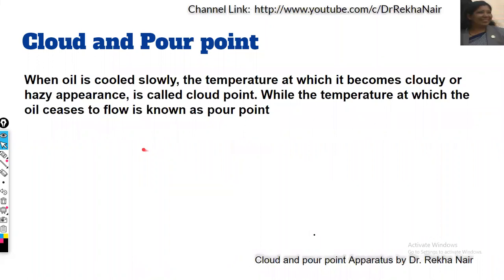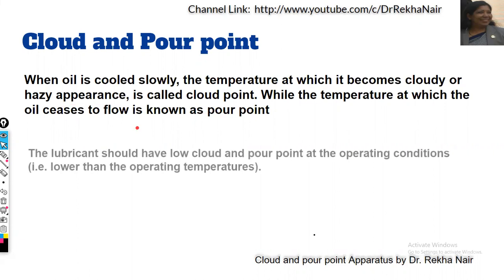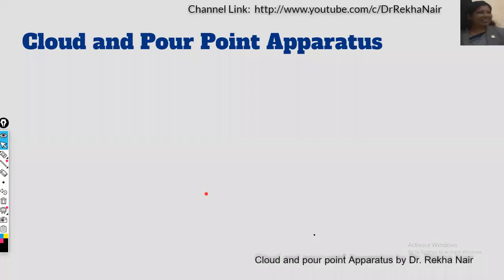When oil is cooled slowly, there is a temperature at which it becomes cloudy with a hazy appearance — we call it the cloud point. The temperature at which the oil ceases to flow is called the pour point. The lubricant should have a low cloud and pour point at the operating conditions.